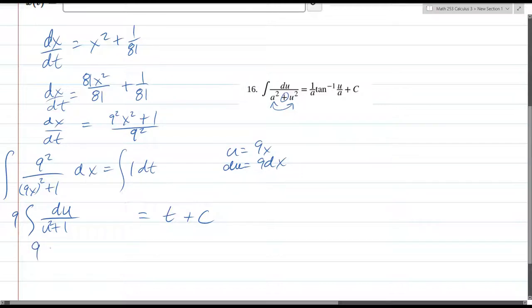And this is 9 tangent inverse of, that's important. Oh, there's also an over, there's the 9 you get, and then the 1 over a. Our a is, our a is 1. That comes from right here.